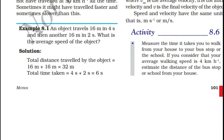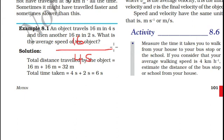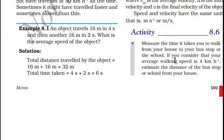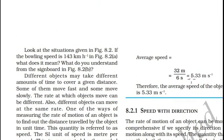Now let us see example 8.1. An object travels 16 meters in 4 seconds, and then another 16 meters in 2 seconds. What is the average speed? The total distance is 16 + 16 = 32 meters. The total time taken is 4 + 2 = 6 seconds. Therefore, average speed equals 32 divided by 6, which is 5.33 meters per second.